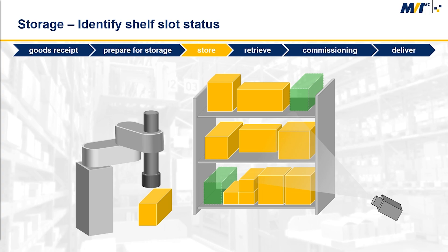Next, the products are stored. Then they are retrieved, which means they are identified and located, so they are ready to be packed. Then the goods are commissioned, which means they are basically packed and boxed. And then they are delivered.